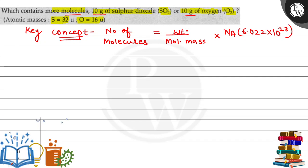First, we'll find the number of molecules for sulfur dioxide (SO2). Given weight equals 10 grams. Avogadro's number is constant. Next, we have to find the molar mass. Molar mass of sulfur equals 32,